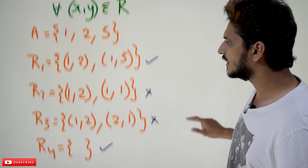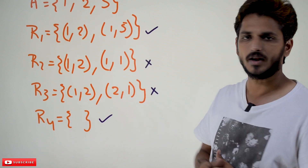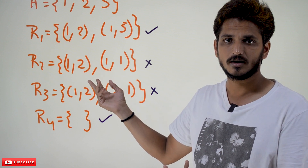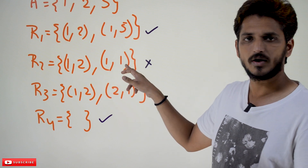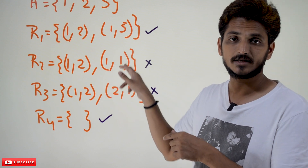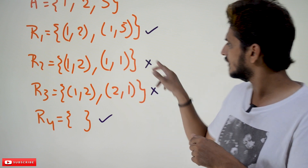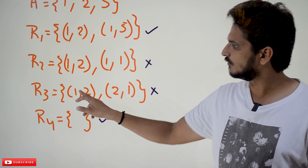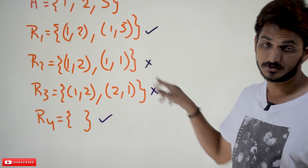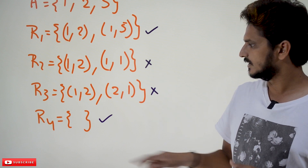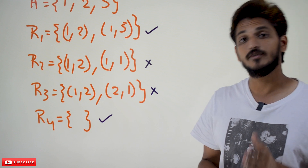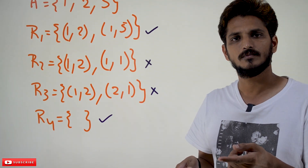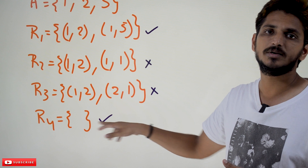Similarly, the second example: {(1,2), (1,1)}. For (1,2): x relates y, y relates x is not there — okay. But for (1,1): x relates y, y relates x — (1,1) itself satisfies both, and it should not be there. So it is not an asymmetric relation. The third example: {(1,2), (2,1)} — (1,2) and (2,1) are both present, so it is not an asymmetric relation. The last one is the empty set: if x relates y is not present at all, there is nothing to check. So it is an asymmetric relation.